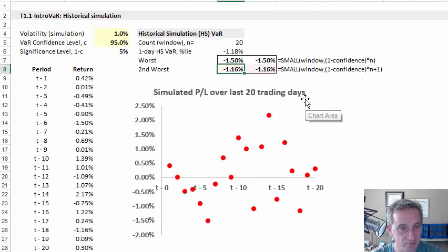However, in the FRM, what we do is follow Dowd, and we actually use the second worst. And the particular function to generalize for various N is given right here. And so I've copied it over. It's SMALL. Then we use the window as the input. And then it's 1 minus the confidence level. Here that's 1 minus 95% or 5%. So it's 5% multiplied by the N. In this case, 5% times 20 is 1. But we add 1.